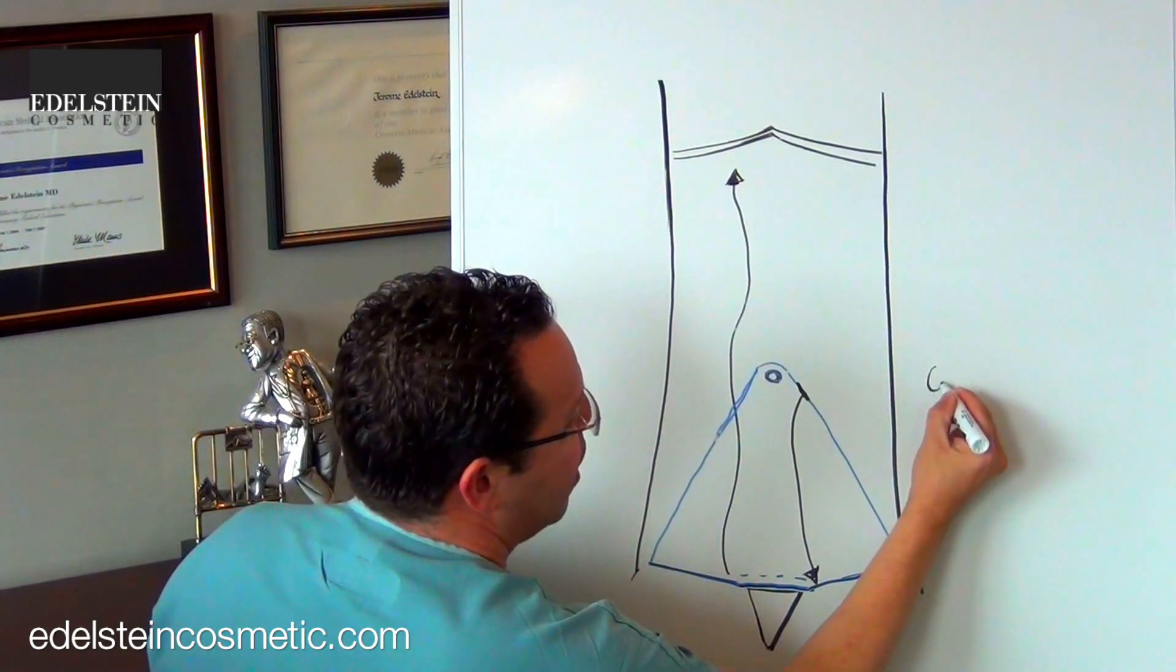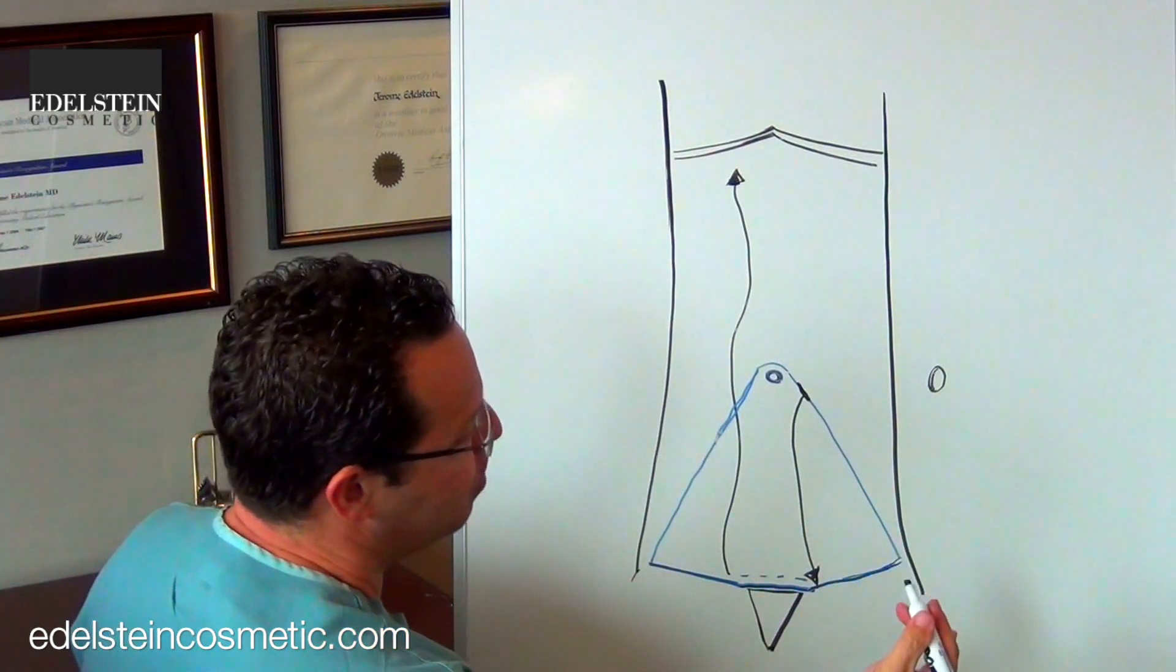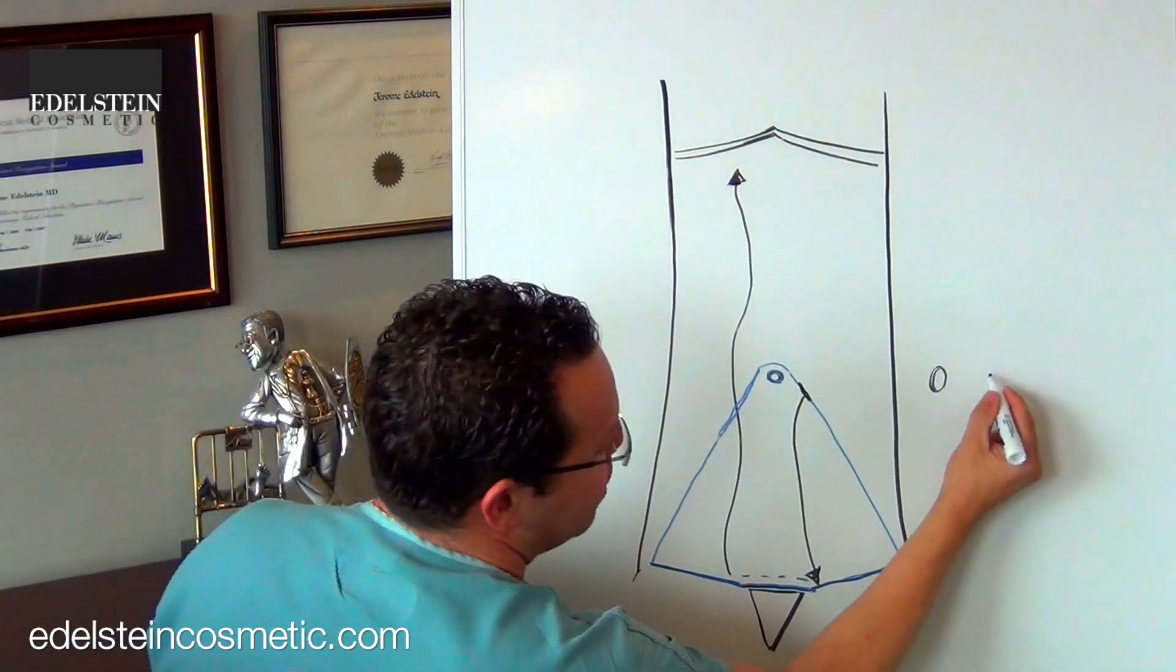In a woman, I try to make it a little bit of a vertical ellipse. I find that's more youthful looking, it looks better than a big round belly button or a belly button that's horizontal.